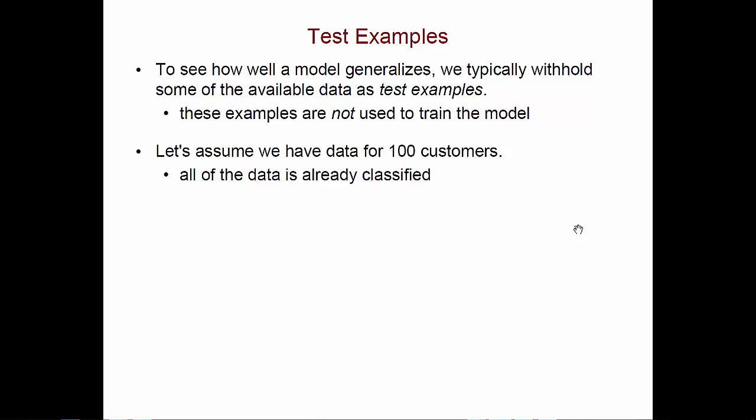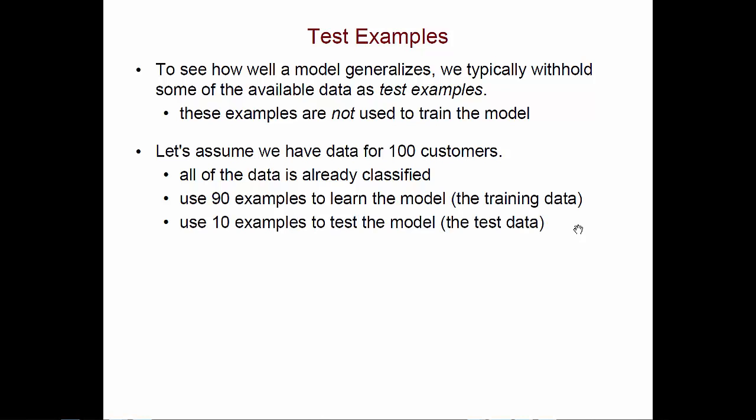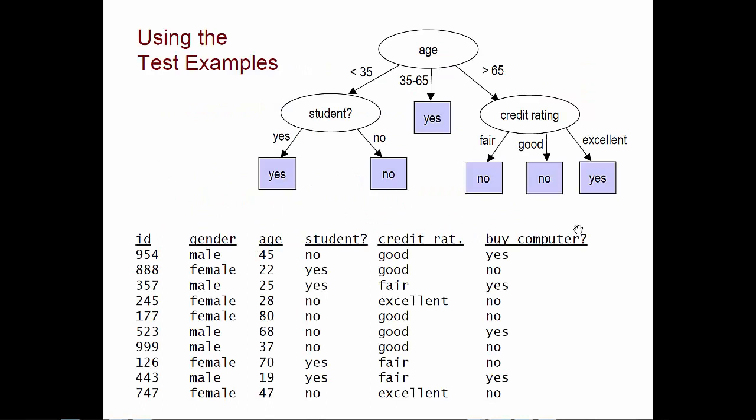Let's say, for example, that we had data for 100 customers. All of it has already been classified, meaning we already know whether those customers purchased a computer or not. Instead of using all of that data for training, we're going to say maybe use 90% of it to learn the model. That's going to be our training data. And the other 10 examples will be used to test the model. In reality, we'd like to have even more data than this so that we can have more examples for training and more for testing, but this will allow me to illustrate how the test examples get used.